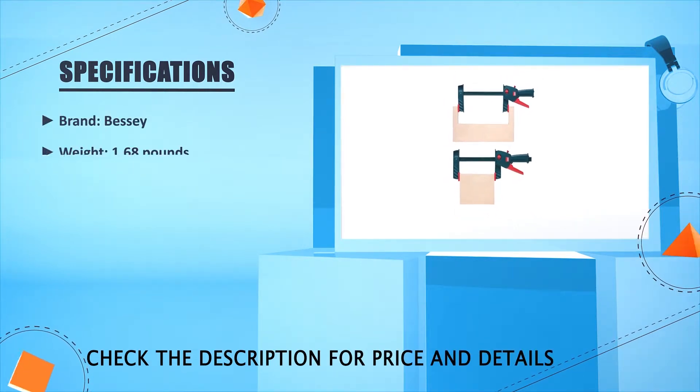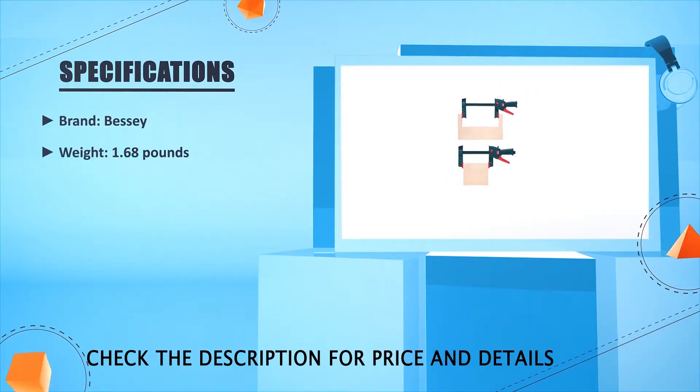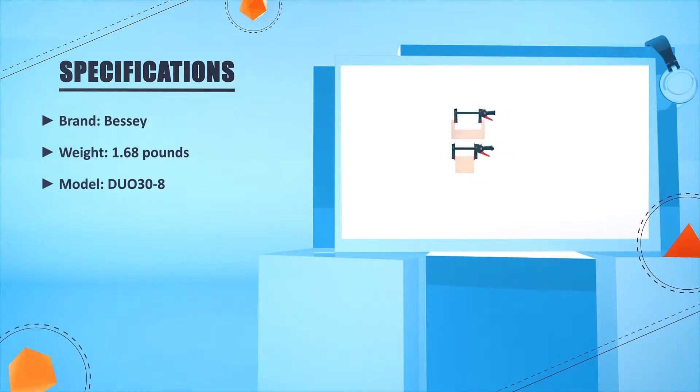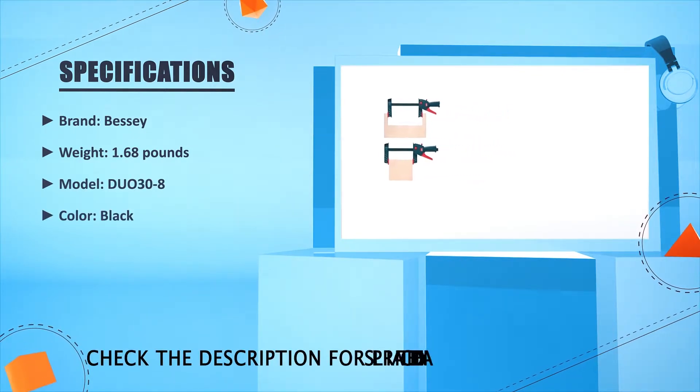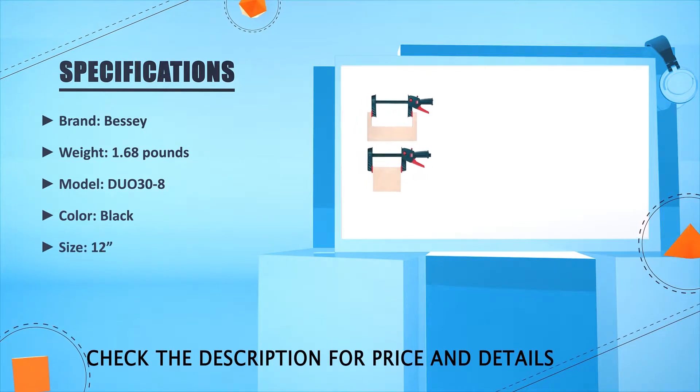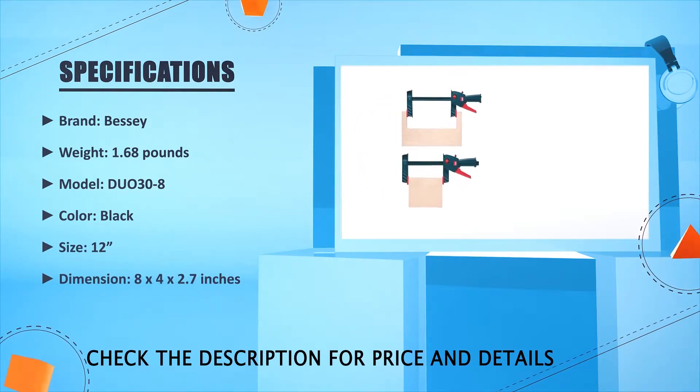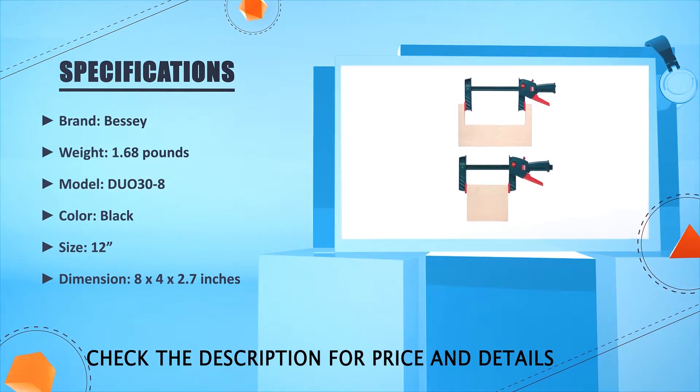Brand: Bessie. Weight: 1.68 pounds. Model: DUO-308. Color: Black. Size: 12 inches. Dimension: 18.2 x 2.4 x 2.7 inches.